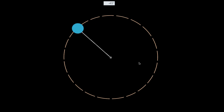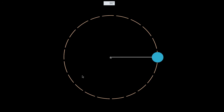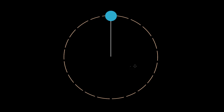Let's say you start with a yo-yo and you whirl it around vertically — this is a vertical circle, not a horizontal circle. The ball is actually getting higher in the air and then lower. For our purposes, we just need to know that it's a mass tied to a string. Let's say the mass of the yo-yo is about 0.25 kilograms, the length of the string is about 0.5 meters, and the ball is going about four meters per second when it's at the top of its motion. What we want to find is the tension in the string when this yo-yo is at its maximum height.